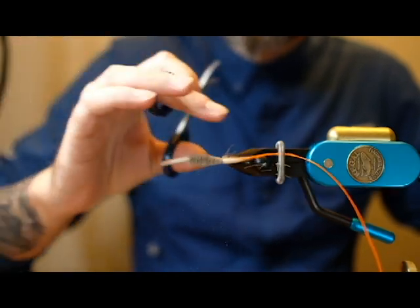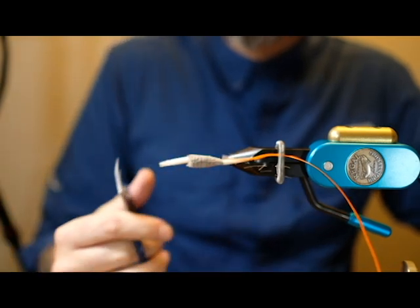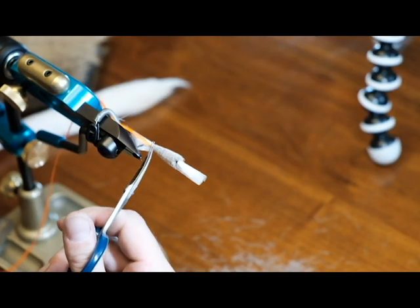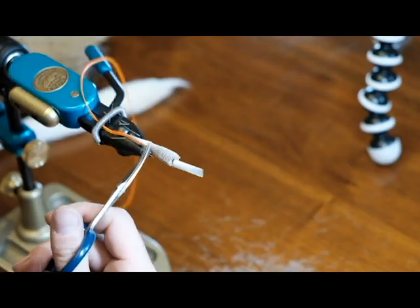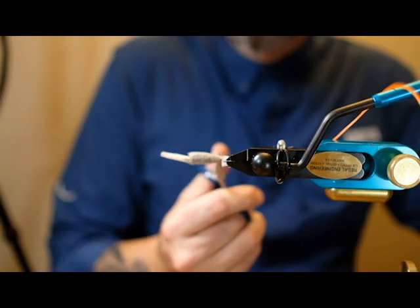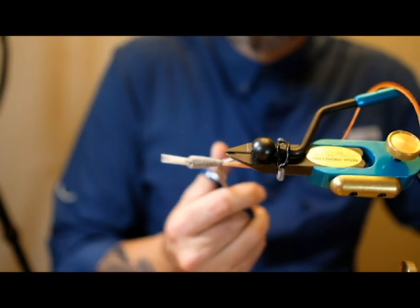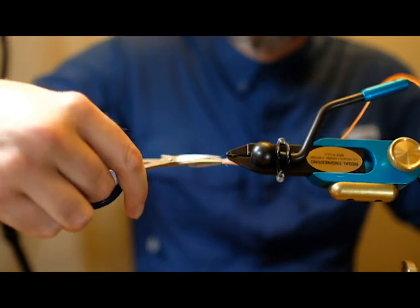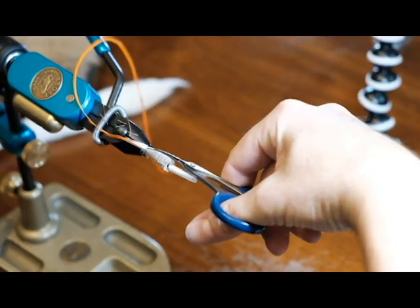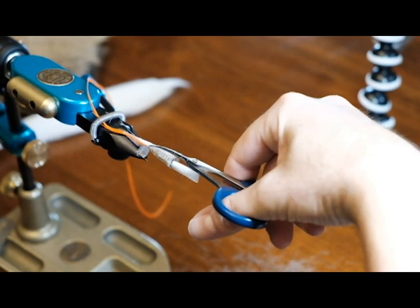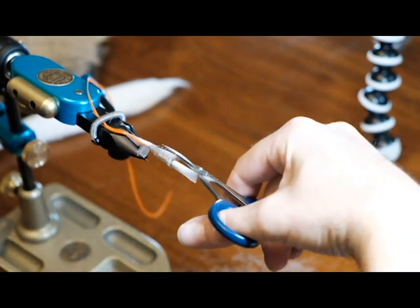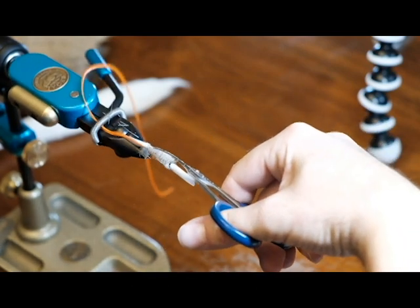When the main body is right about where I want it, I'll come in and just clean up the tail a bit. I usually like to do my bomber bodies in a long cone shape. Some people prefer the cigar shape. I guess it's all just a matter of preference.